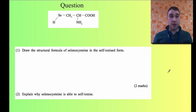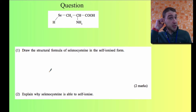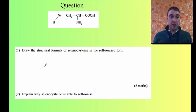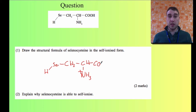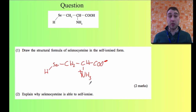The next part of the question says: draw the structural formula of selenocysteine in its self-ionized form. So we're going to draw the zwitterion form of selenocysteine. Starting with the hydrogen, going up to selenium, then a carbon group, another carbon group. Down at the amino group, we're going to make that NH3+ and give the nitrogen a positive charge. And up at the carboxyl group, COO, we give that a negative charge. Now we have the ionized carboxyl group and the ionized amino group.